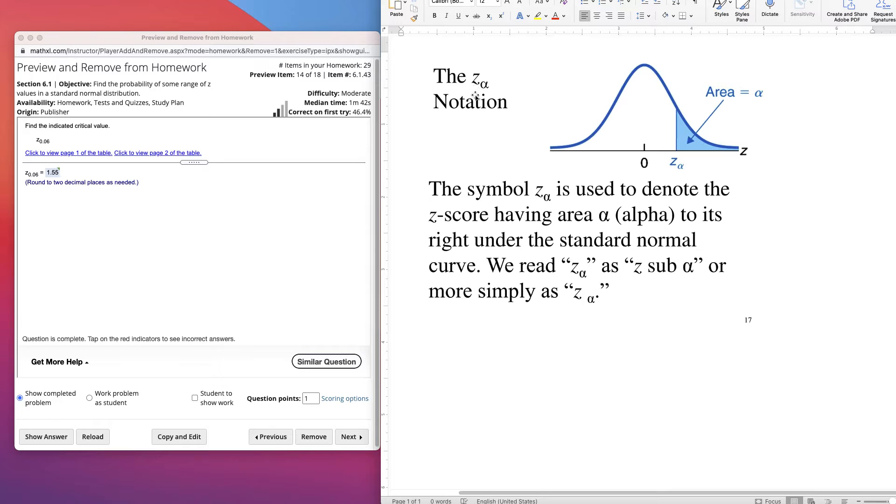Quick video on this notation z sub alpha. So the notation z sub, it's in the lower portion alpha, basically means the area under the normal curve to the right of that z value. And the area is the alpha.